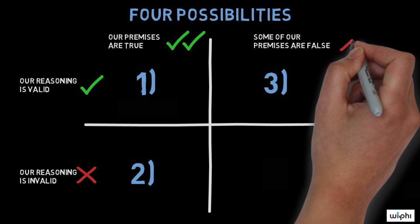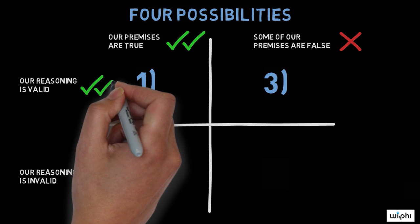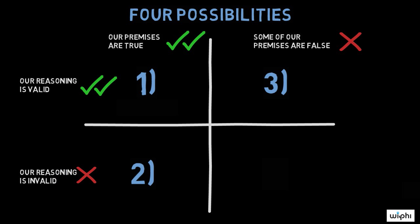Possibility three, we may have our facts wrong, some of our premises are false, and we may use them properly, our reasoning is valid.